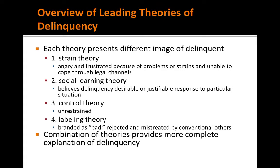Let's go through the leading theories of delinquency. Strain theory talks about angry and frustrated juveniles who can't cope through legal channels. Social learning theory sees delinquency as a desirable or justifiable response to particular situations. Control theory talks about how we're already motivated toward delinquent behavior. And labeling theory talks about being branded bad and mistreated by others. Combining these theories provides a more complete explanation of delinquency.